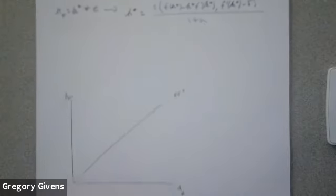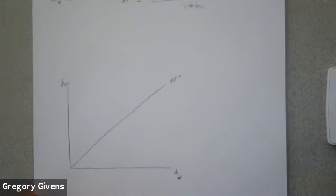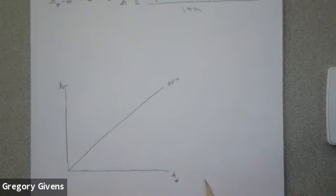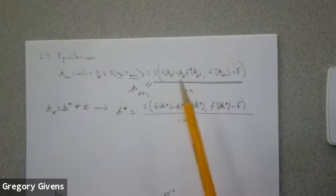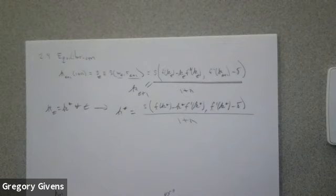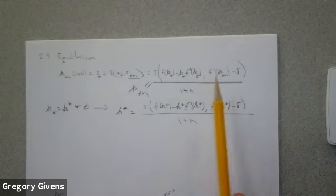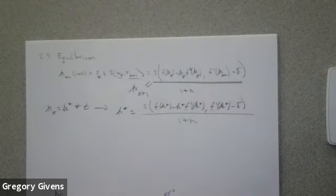The basic OLG model without further restrictions actually implies a number of different types of dynamic behavior. Let me illustrate some of those possibilities in a graph, where we can demonstrate the mapping this model implies from K_T to K_{T+1}. This law of motion implies a mapping from K_T to K_{T+1}, but we can't solve for it explicitly like we did in the Solow model because this is a nonlinear function in K_{T+1}.